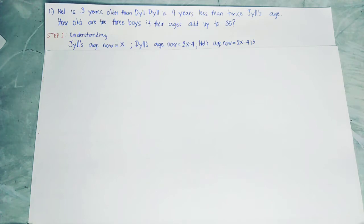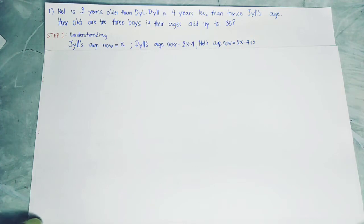And Dil's age is 4 years less than twice Dil's age, so Dil's age equals 2x minus 4. And Dil's age equals 2x minus 4 plus 3, because Dil is 3 years older than Dil.